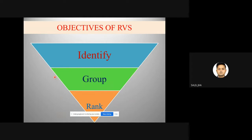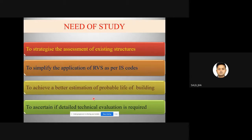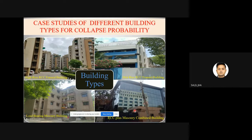The objective of RVS is to rapidly score the condition of existing building structures without carrying out detailed structural analysis. RVS identifies, groups, and ranks building stocks that may be vulnerable under Risk-Targeted Maximum Considered Earthquake (MCER). The need for this study arises because existing guidelines are complex and have failed to convey the idea clearly. A simplification of application of RVS as per IS code is required for a better estimation of collapse probability and to ascertain if detailed technical evaluation is needed.